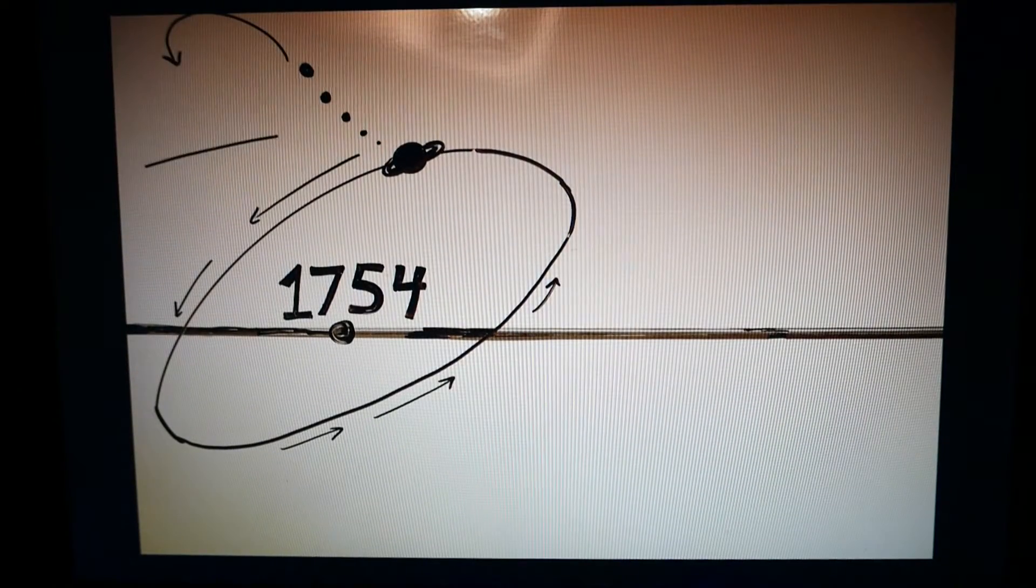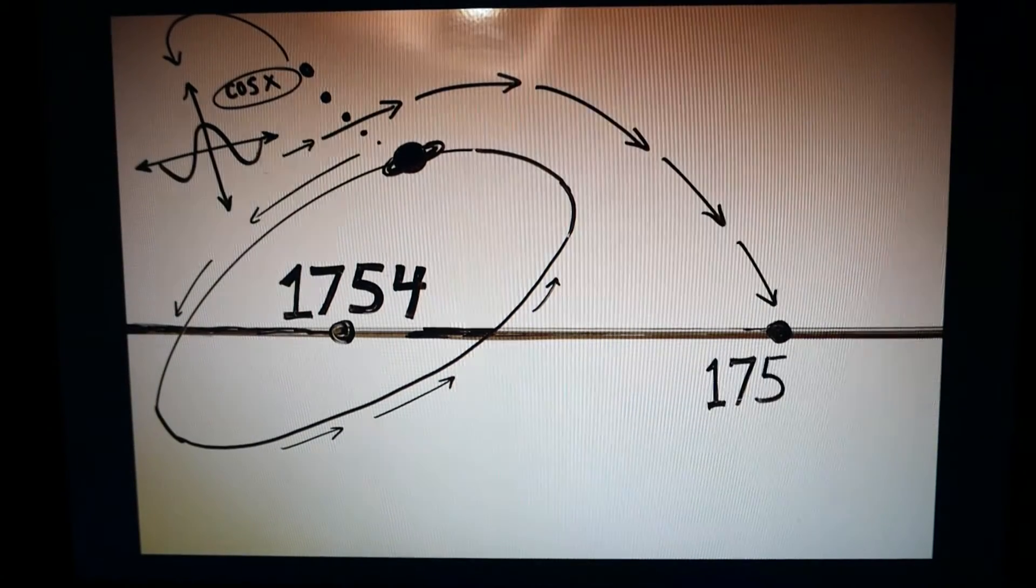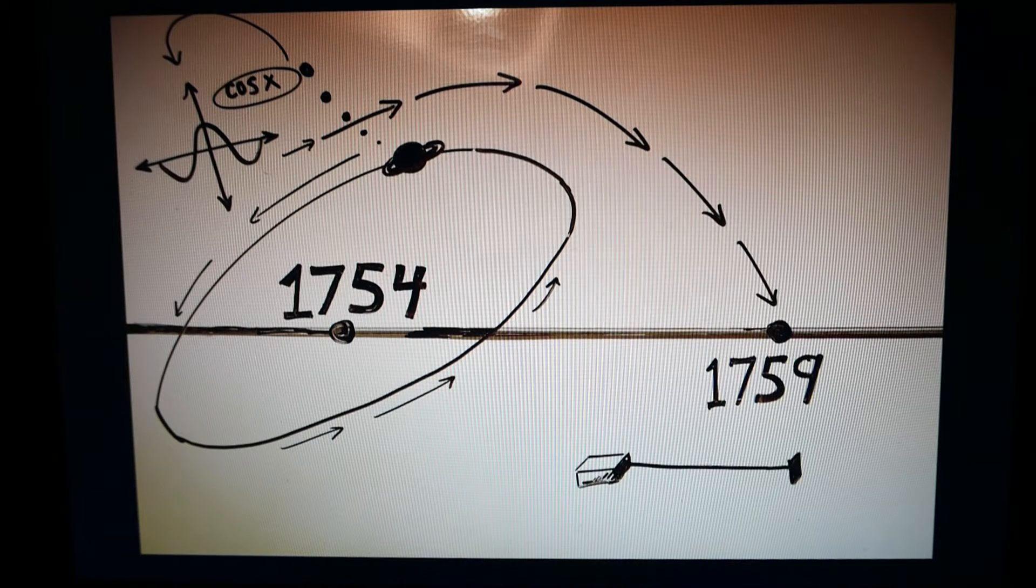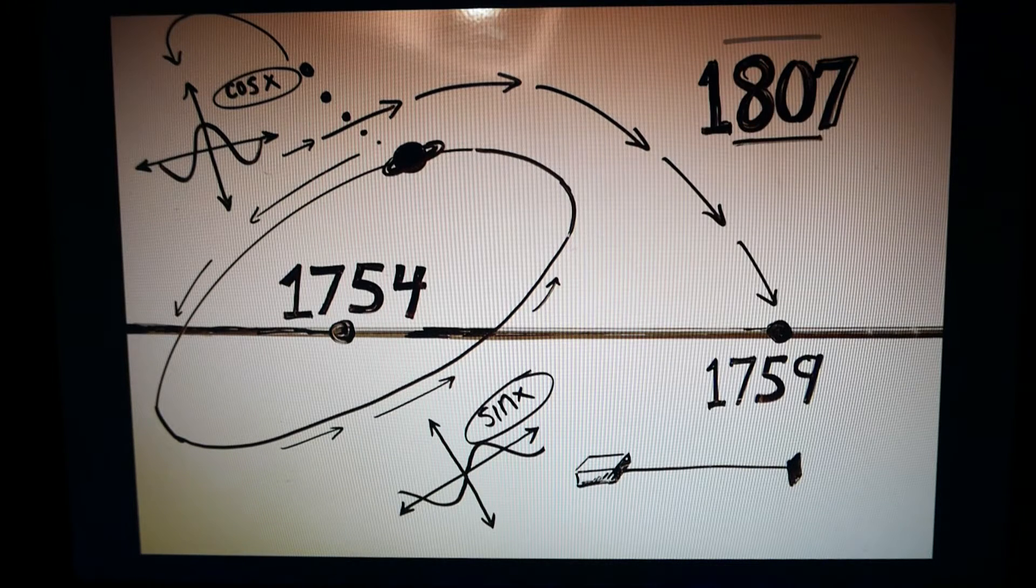Variants of the Fourier transform were used by Alexis Clairot in 1754 to compute an orbit using cosines. And in 1759, Italian mathematician Joseph Lagrange computed coefficients of a sine series for a vibrating string. It wasn't until 1807, however,